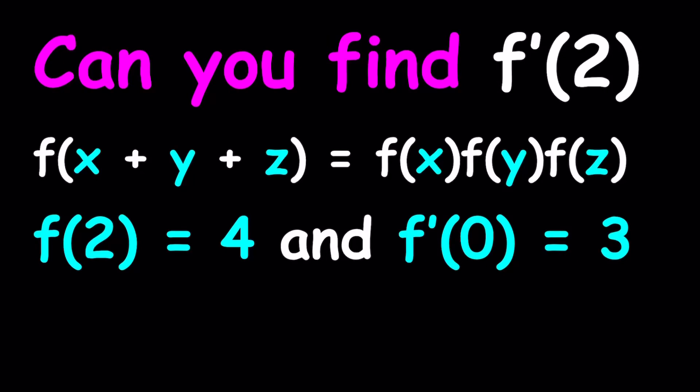Hello everyone. In this video, we're going to be solving a very interesting functional equation. We have f(x+y+z) equals f(x) times f(y) times f(z). We're also given that f(2) equals 4 and f'(0) is equal to 3. And we're supposed to evaluate f'(2).